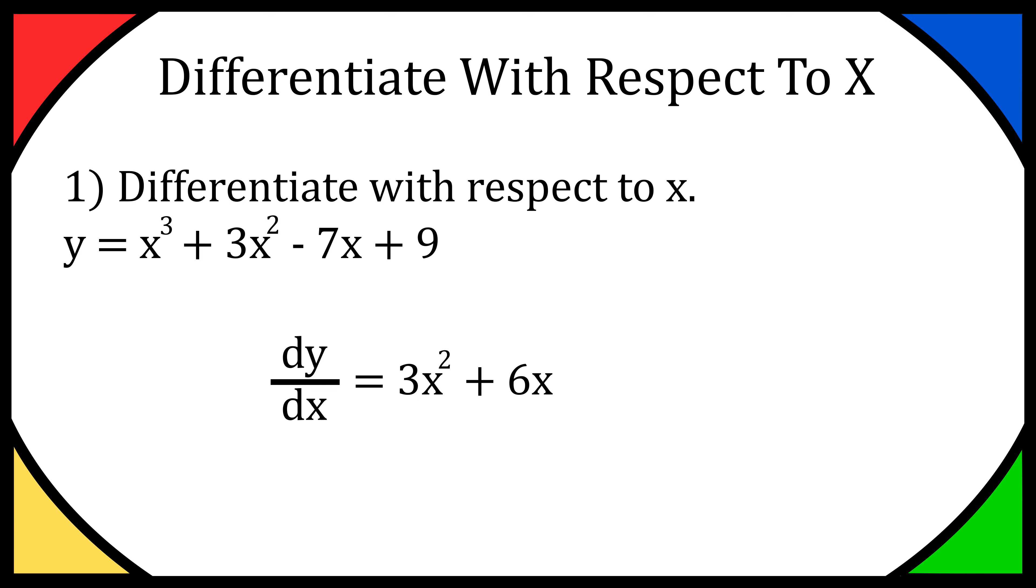x⁰ is 1, which leaves us with -7. You don't need to think about it too much—just remove the x, giving us -7. As for the +9, constants disappear. That's because we effectively have 9 × x⁰, which is 9 × 1. When you multiply the front by 0, it all disappears.